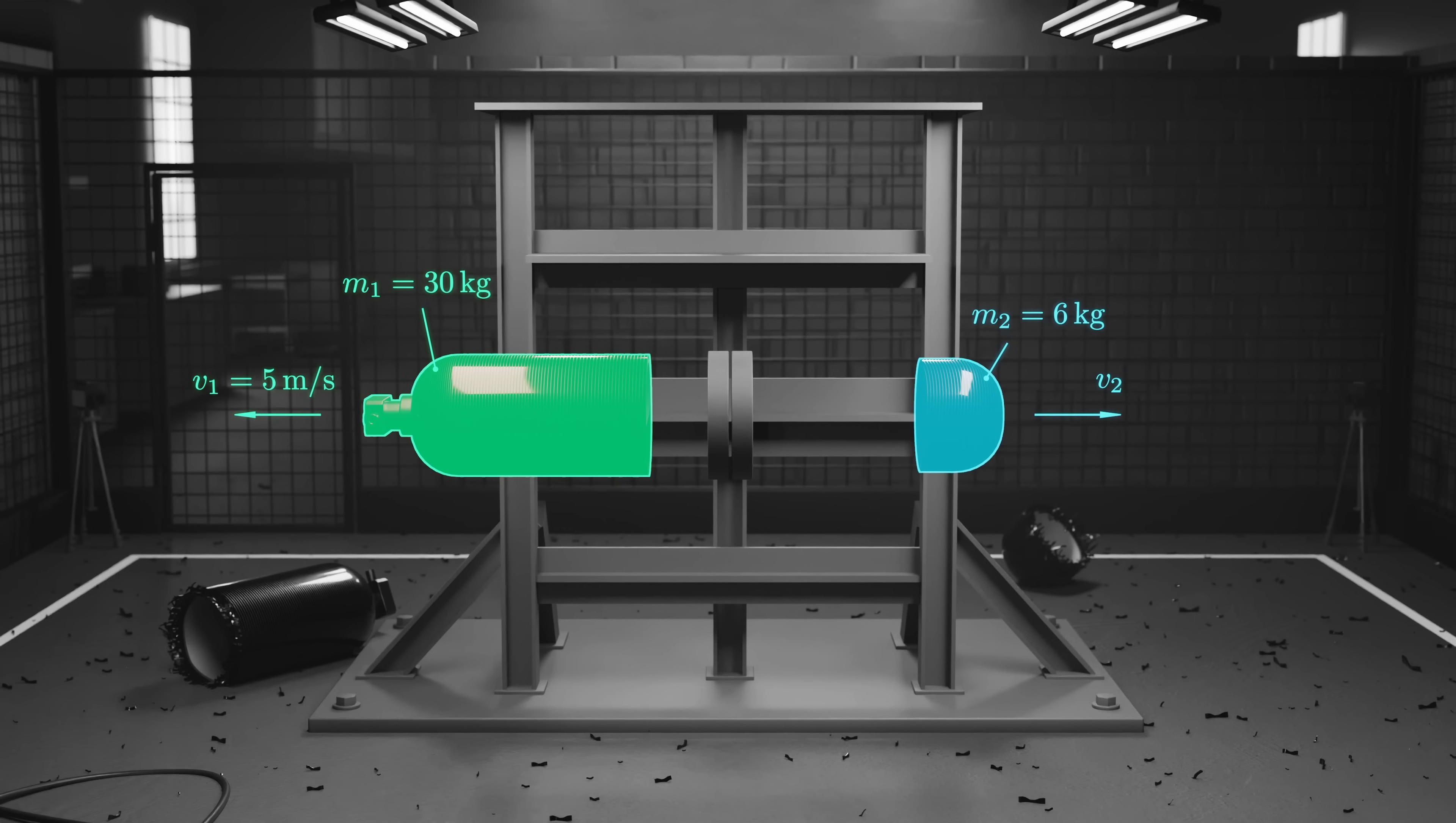The two pressure vessel fragments make up our isolated system. The forces due to the explosion are internal to the system, and we can neglect the small frictional forces at the support. With no net external forces acting on the system, conservation of momentum applies, and the total momentum before and after the explosion must be equal. Since the vessel was stationary before the explosion, the initial momentum was 0.